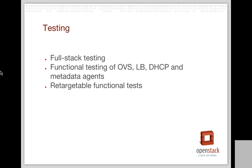Testing is definitely something the Neutron team has really taken seriously, really since Icehouse. In Juno we got full API coverage for all Neutron APIs in Tempest. We're expanding what we're doing testing-wise to include full stack testing in the tree — there's a spec out for review that looks very close to landing. We're also going to get increased functional testing of all the agents: the Open vSwitch agent, Linux bridge, DHCP, and metadata agents, and we'll finish the work around targetable functional testing.